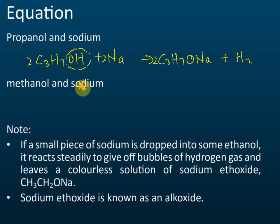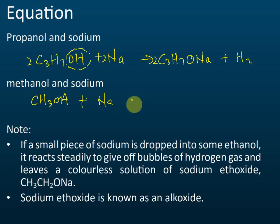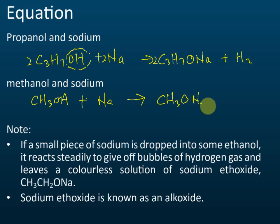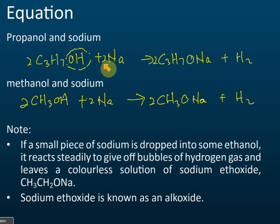Another example: methanol reacting with sodium. Methanol is CH₃OH. The product is CH₃ONa, and hydrogen gas is also produced. Balancing: 2CH₃OH + 2Na → 2CH₃ONa + H₂. This reaction is similar to the reaction between sodium and water.